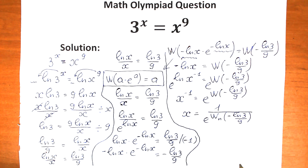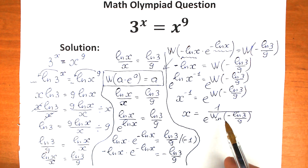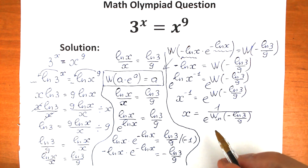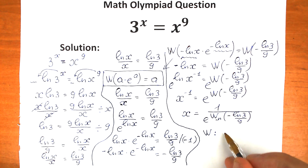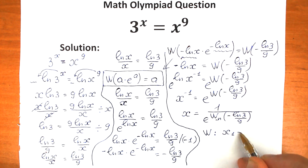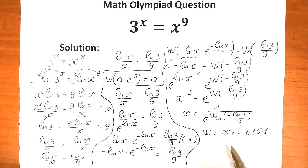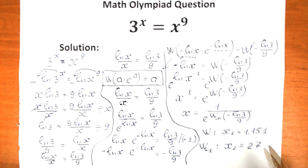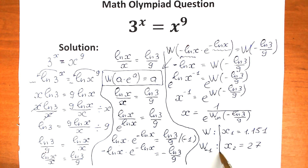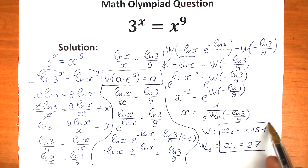This is our final answer. The Lambert W function has multiple branches indexed by n, giving us two roots. With the principal branch W₀, we get the first root x₁ ≈ 1.151, and with the branch W₋₁ we get the second root x₂ = 27. These are the two roots to this challenge.